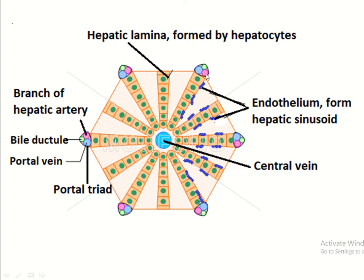The portal triad contains branches of the hepatic artery and the bile ductule. The blood from the portal vein and the hepatic artery enters the hepatic sinusoid.